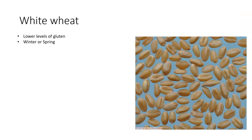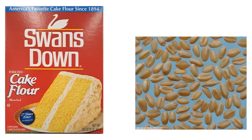White wheat has a white seed coat and lower levels of gluten. Planting time for white wheat can be either spring or winter depending on location. Soft white wheat is used to make cake flour and is used in cakes, pastries, and Asian style noodles.